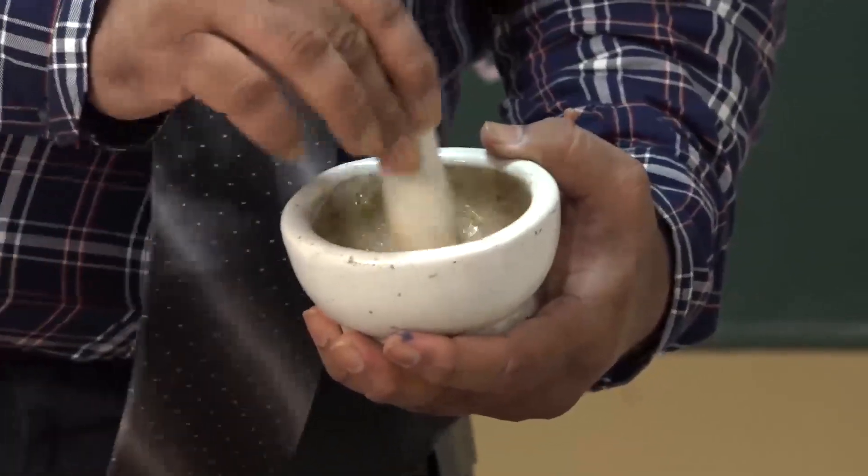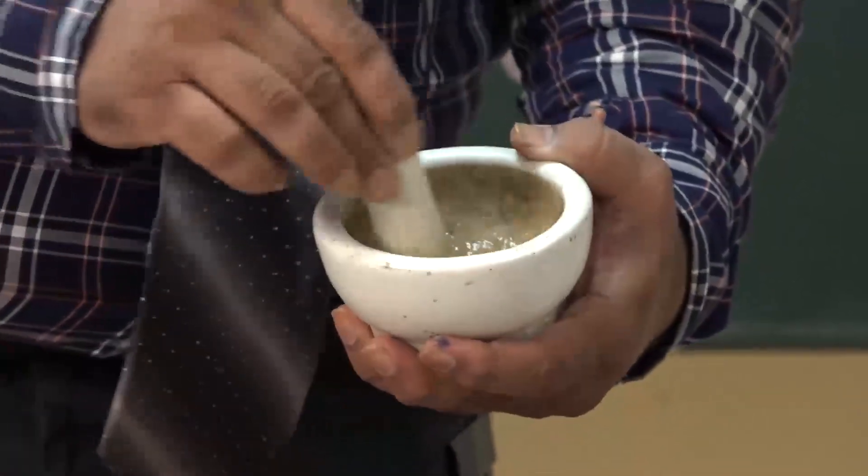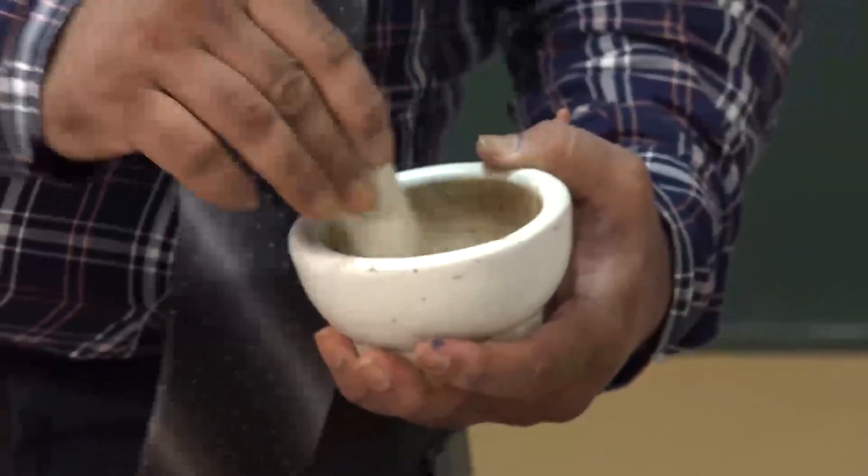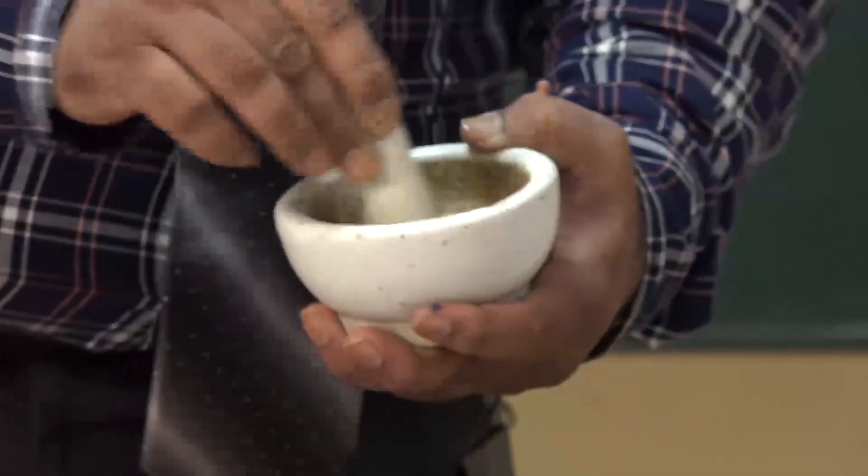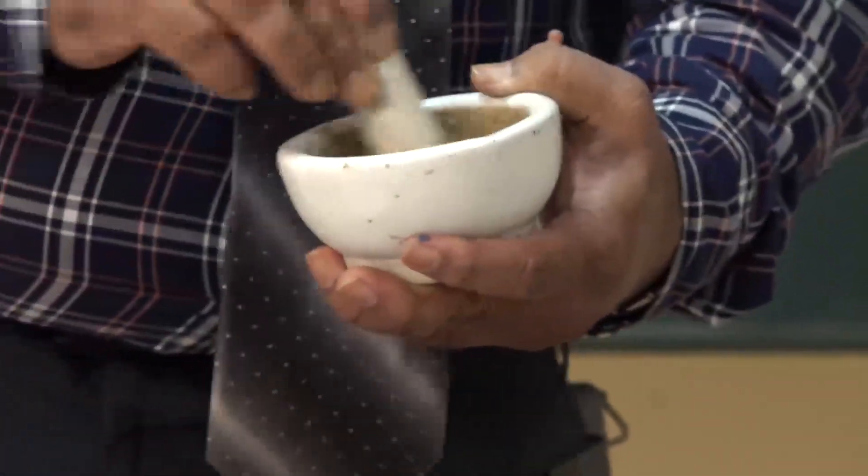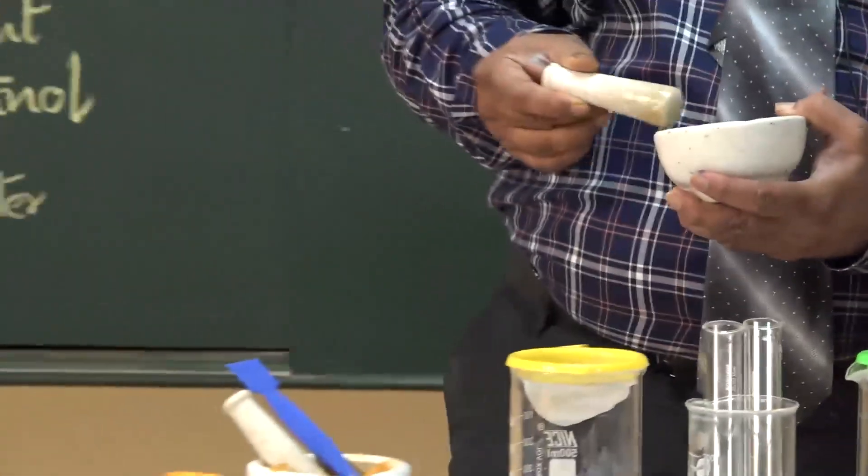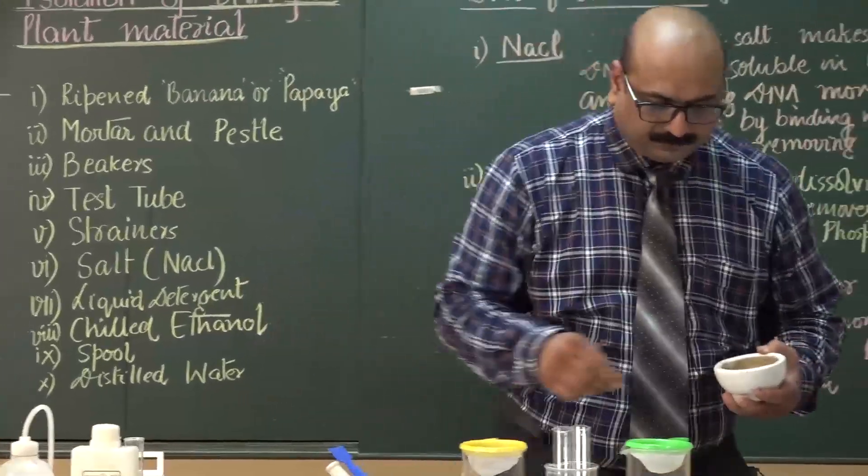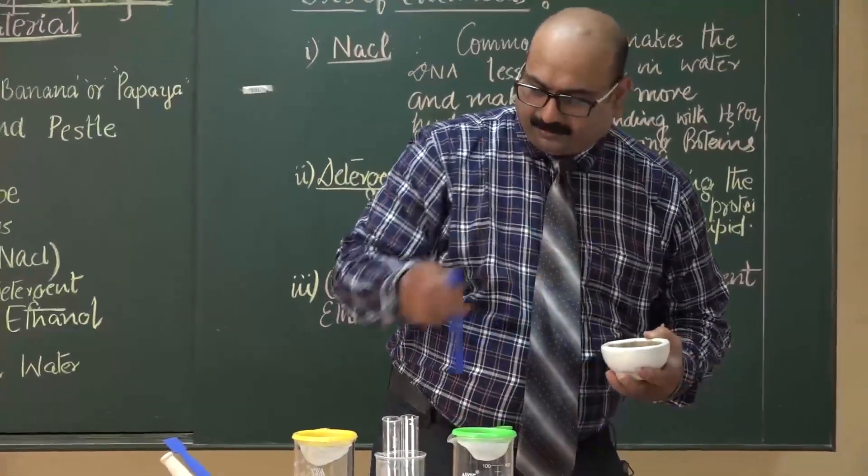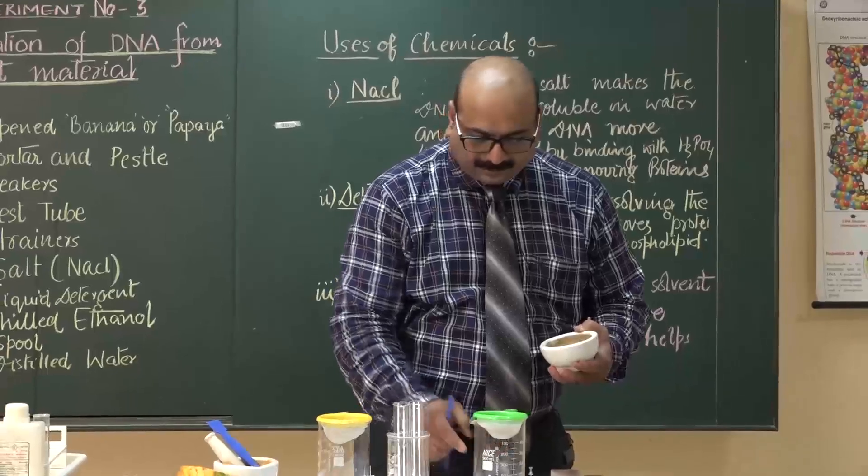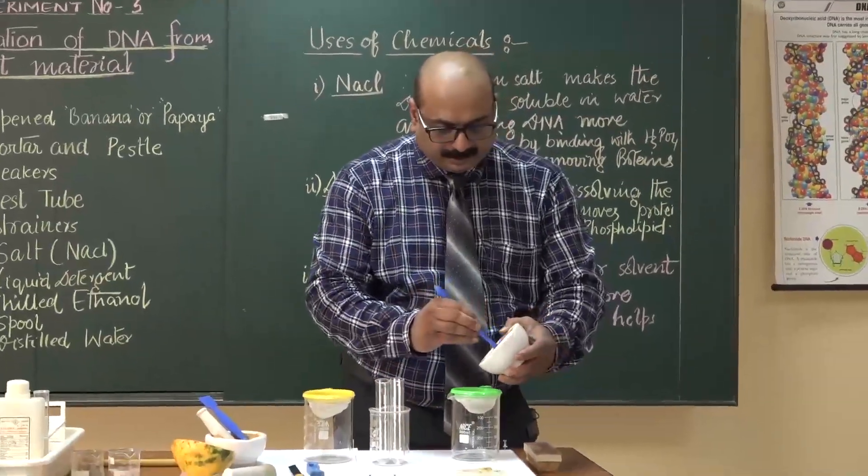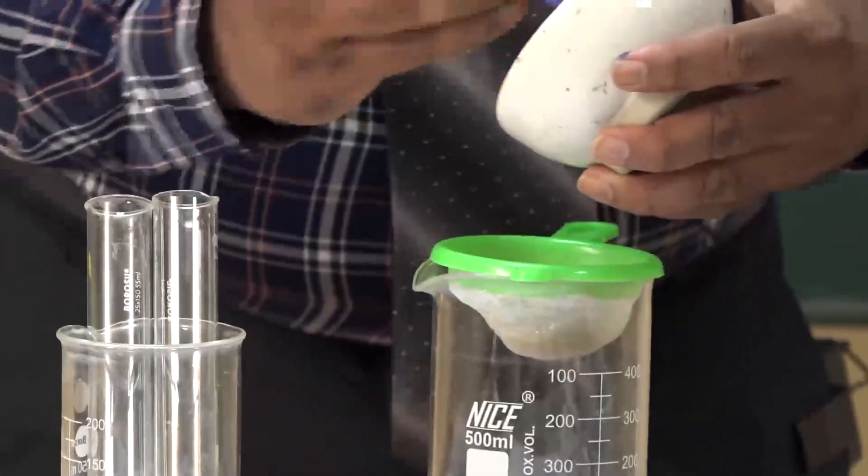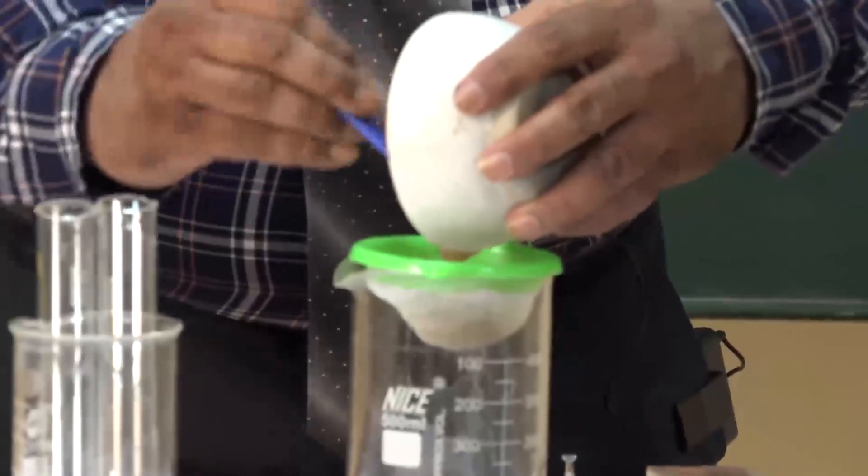So, it was very easy to make paste, it takes less than 4 or 5 minutes. Now it is in a form of slurry. So, it has to be filtered out with the help of this spatula. I am taking out banana paste slurry.